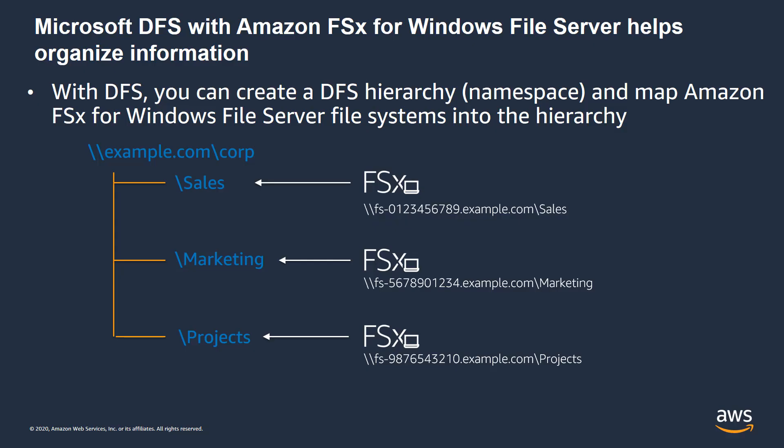Using Microsoft DFS with Amazon FSx for Windows File Server, we can help organize information and make it easier for users to access the file systems. With DFS, you can create a DFS hierarchy or namespace and map the Amazon FSx for Windows File Server file systems into the hierarchy. In this example, we have those three Amazon FSx for Windows file systems mapped into a hierarchy — for example, under example.com/corp.